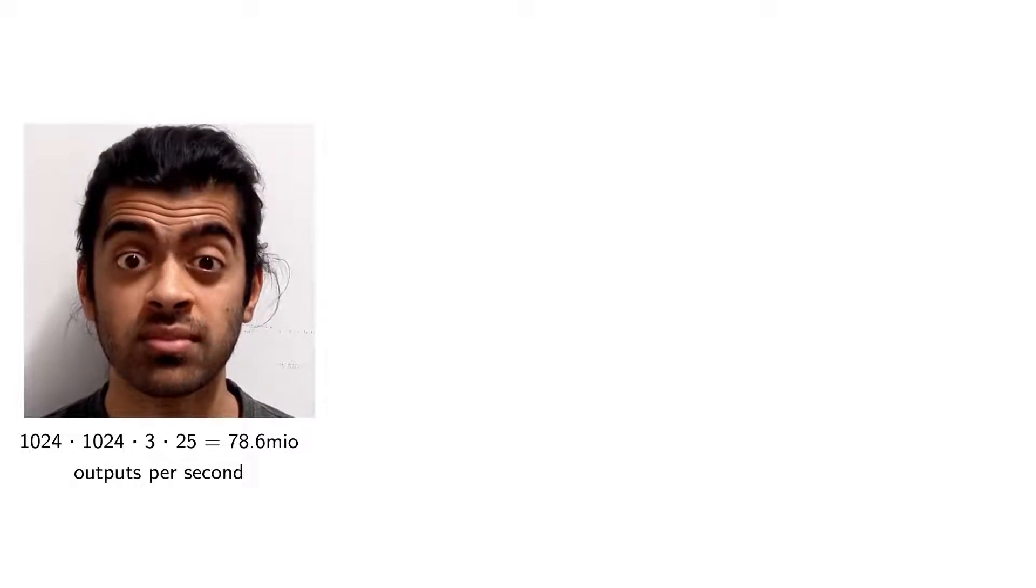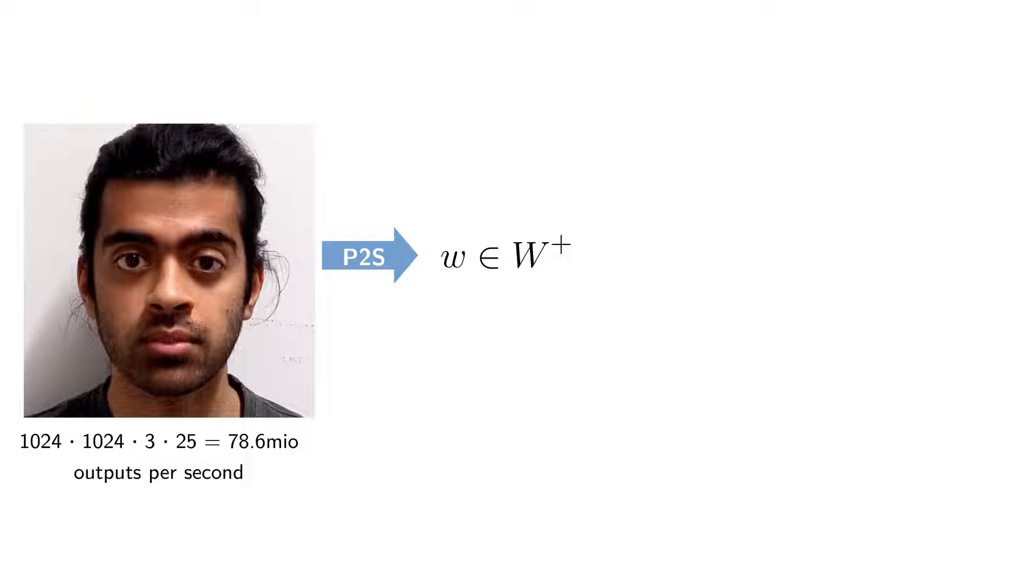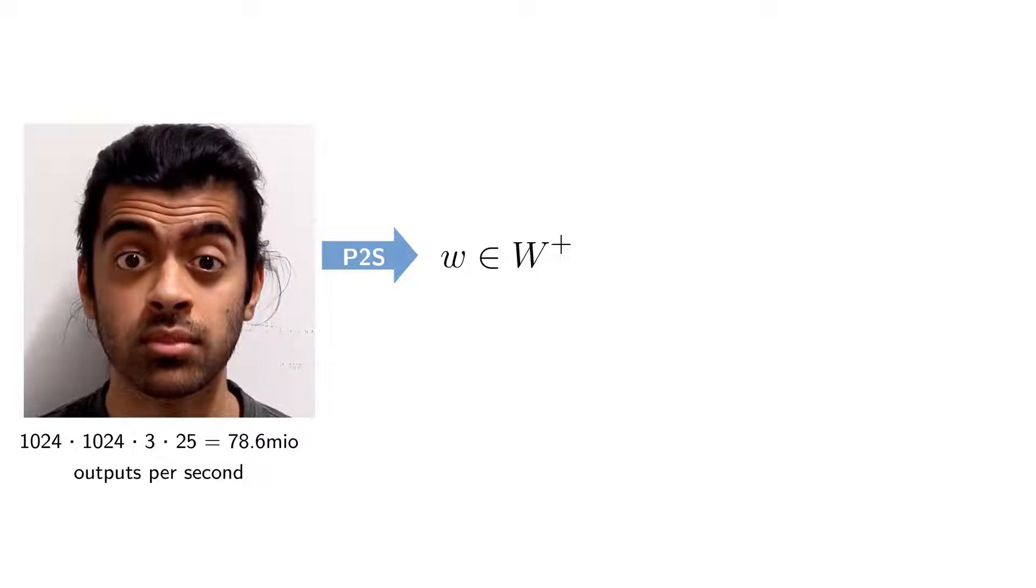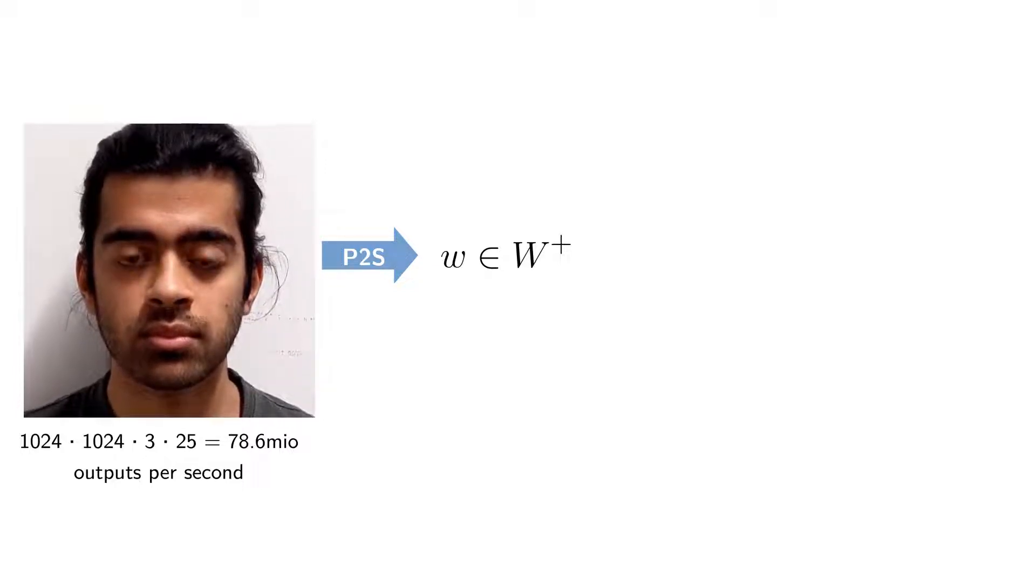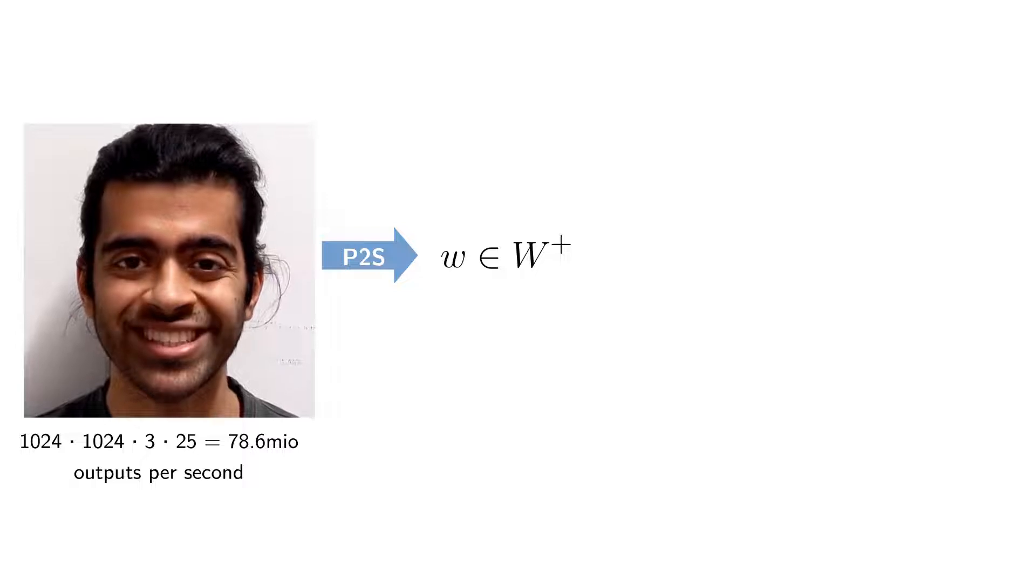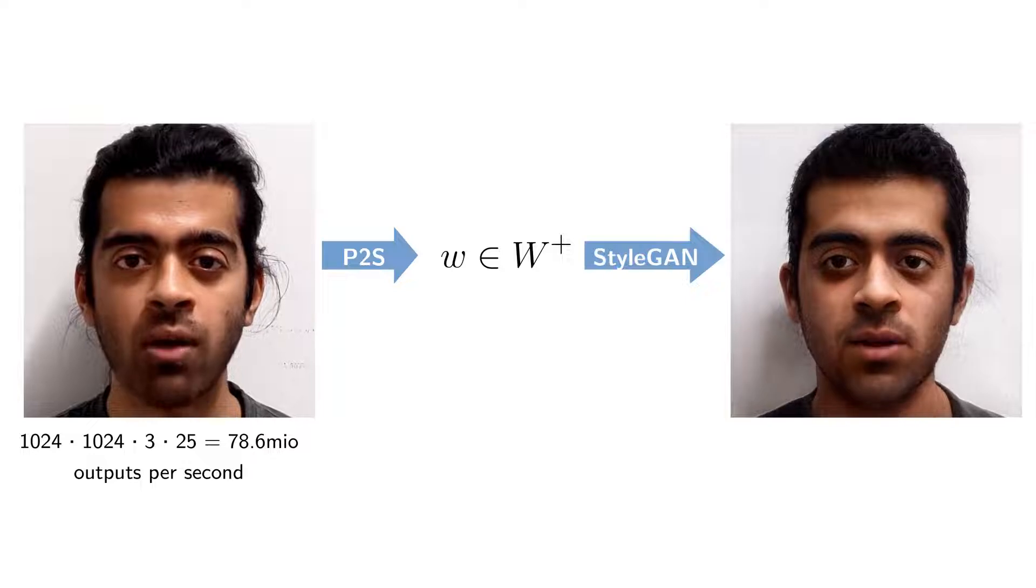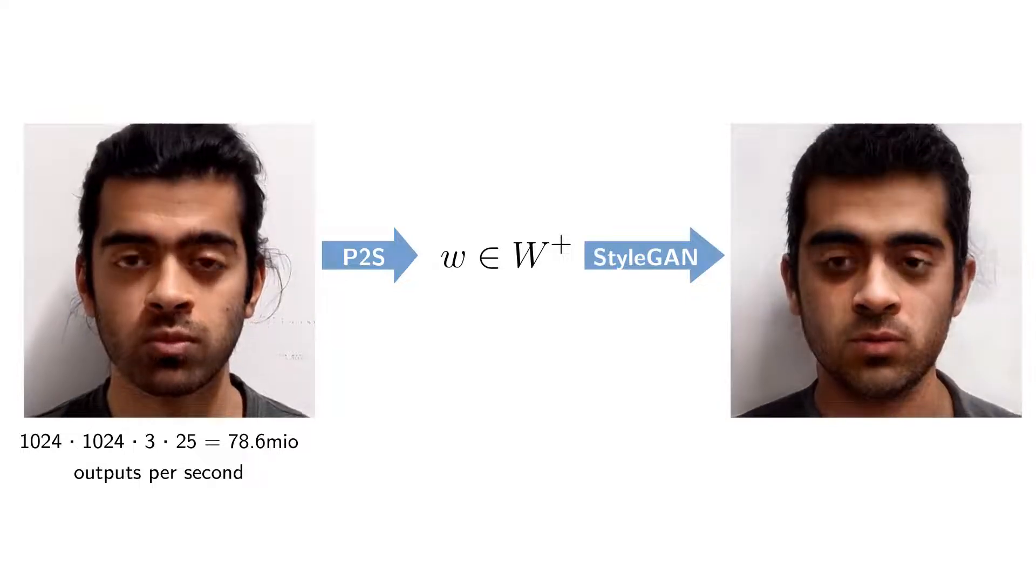This is done by reconstructing our training video with the Pixel2Style network by Richardson et al., turning a sequence of frames into a sequence of latent codes that live in the space W+, which is an extension of the latent space of StyleGAN. StyleGAN can turn such W+ codes back into images, but at our training time, StyleGAN is completely absent.